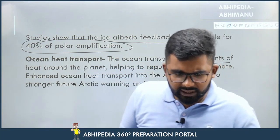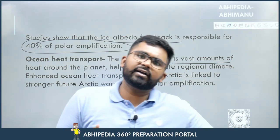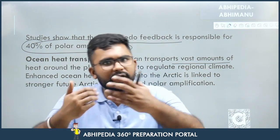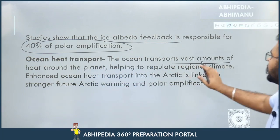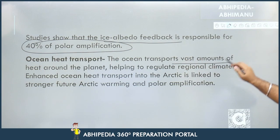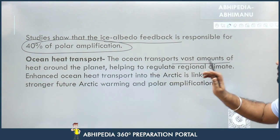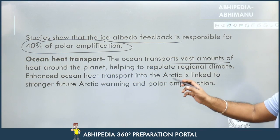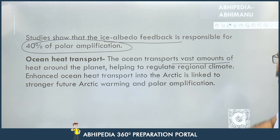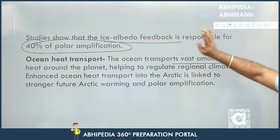In general terms — as seen in NCERT as well — warm water travels from the equator toward the poles, and colder water moves back toward the equator. The ocean transports vast amounts of heat around the planet, helping to regulate regional climate. Enhanced ocean heat transport into the Arctic is linked to stronger future Arctic warming and polar amplification.